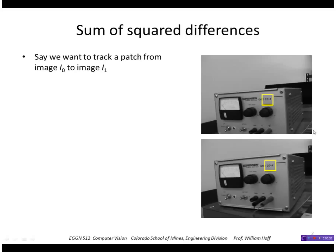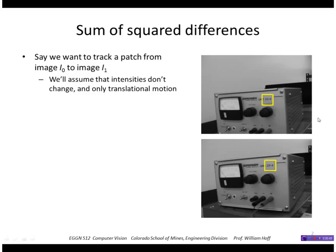Say we want to track a patch of the image in this image I0 to I1. We'll assume that the intensities don't change in that patch and there's only translational motion, so that's true if the motion is small between the two. In that case the intensity at I1 at a displaced value is the same as the corresponding point in I0. Of course in practice we'll have noise so they won't be exactly equal.